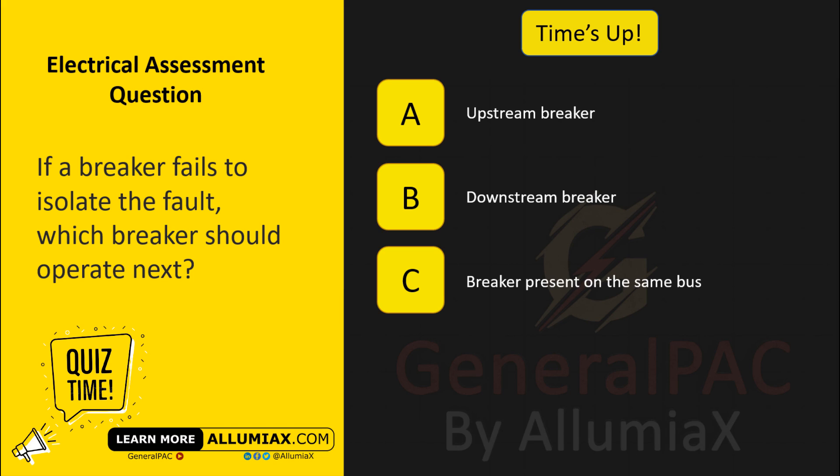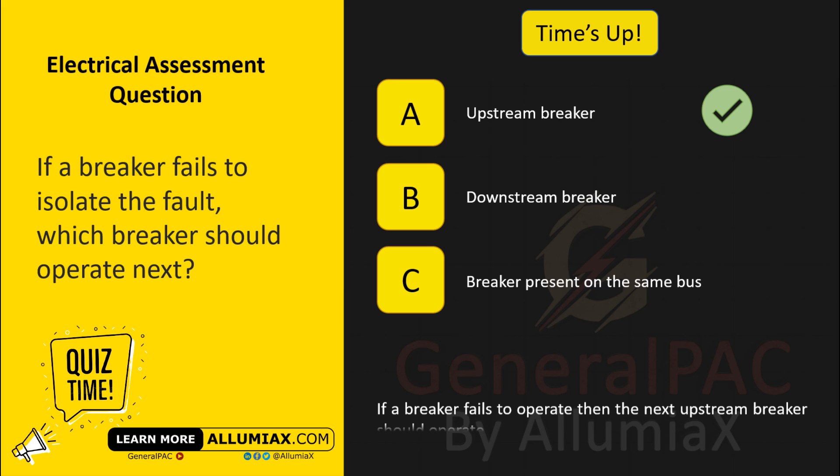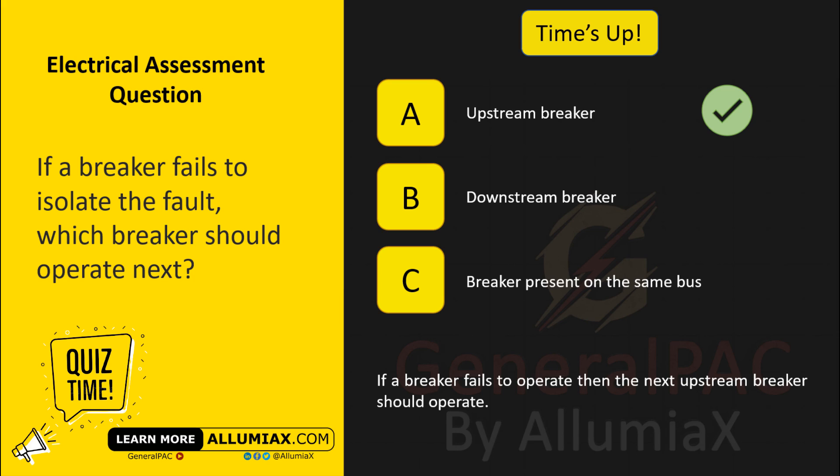The answer is A. If a breaker fails to operate, then the next upstream breaker should operate.